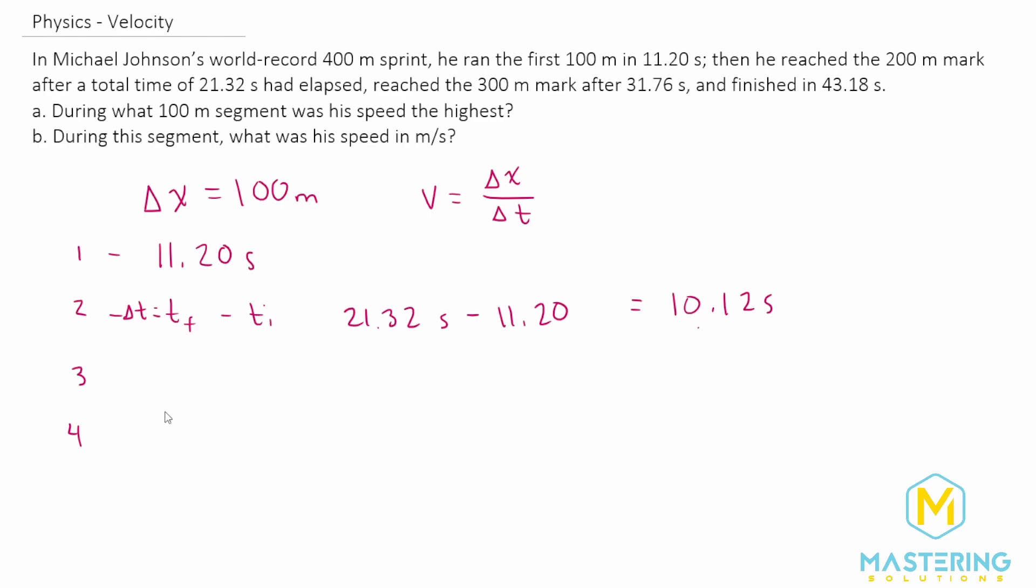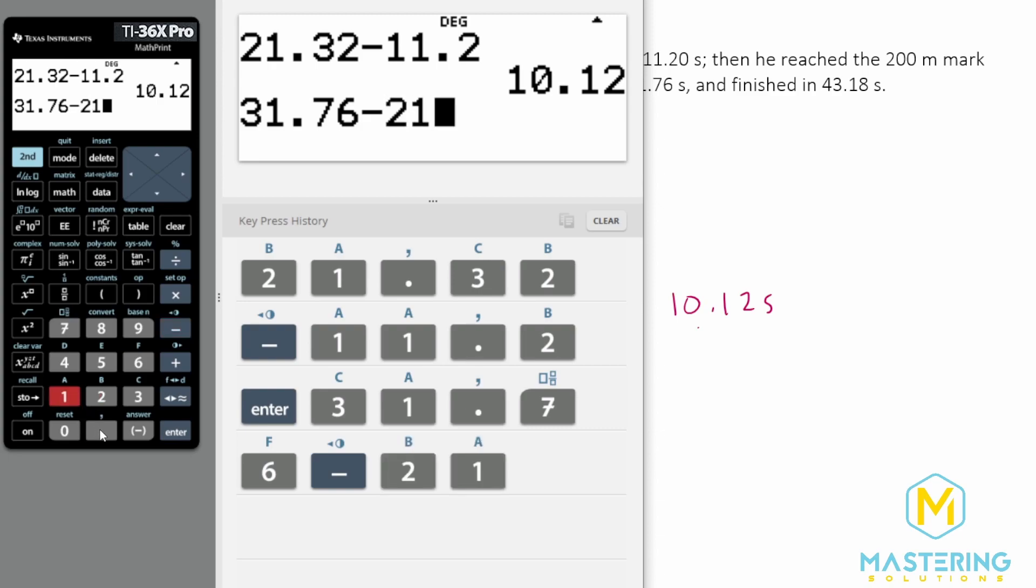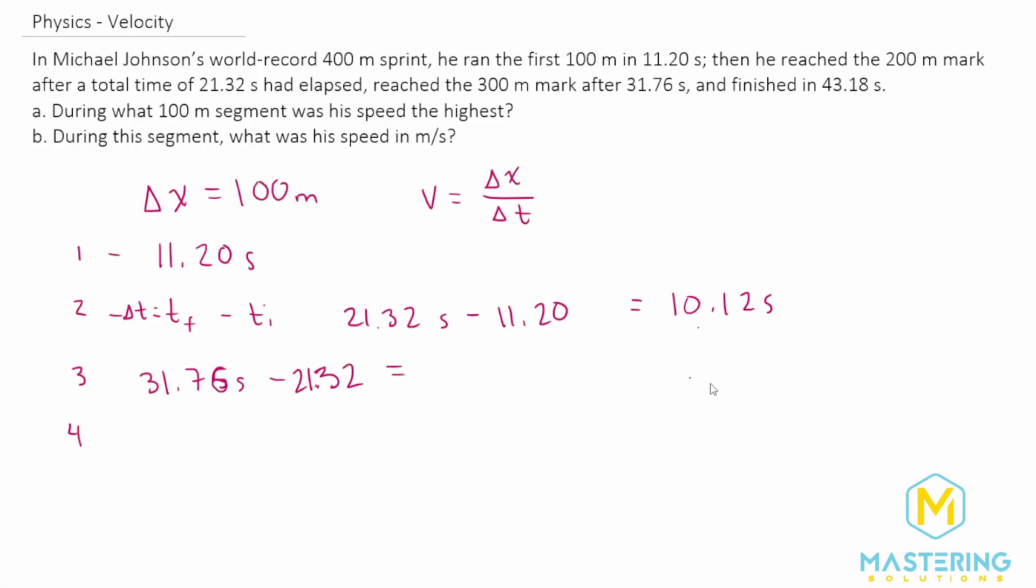So now for part three they say that he reaches the 300 meter mark after 31.76 seconds. So now we have t final of 31.76 seconds minus 21.32. So the time for that section is 10.44 seconds.